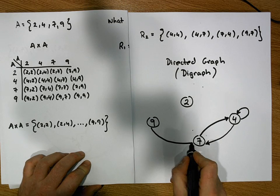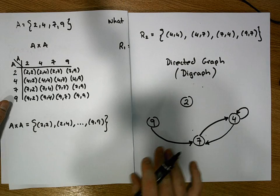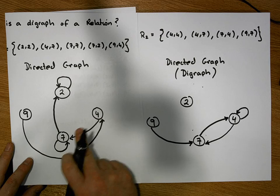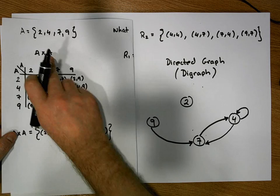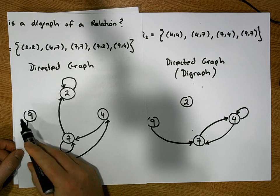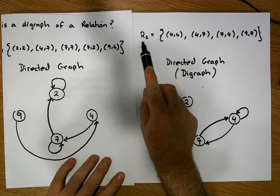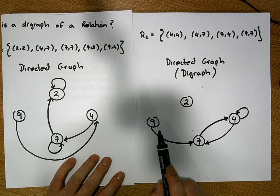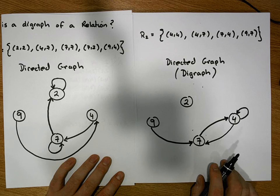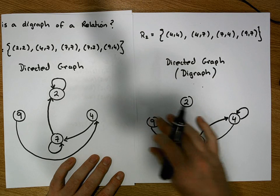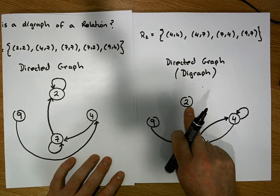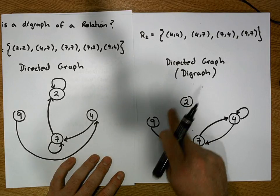This is an interesting graph compared to the one for R1. For R1, each node representing the elements 2, 4, 7, and 9 had some sort of edge connecting to other nodes. This example shows that we can have a relation — a subset of A cross A — where a node has no connections to any other node, and that is perfectly valid. It's important when drawing directed graphs to include all nodes from the set the relation was built on. Two was an element of that set, so it must appear as a node, even though it's not connected to any other nodes.